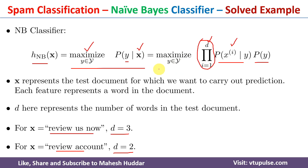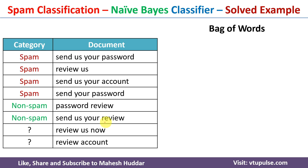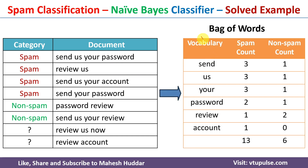Before applying the Naive Bayes classifier, there is one more step: we need to convert the given documents into a bag of words, meaning we count how many times each unique word appears in each class. First, we list all unique words — for example: send, us, you, are, and so on. Then we count occurrences per class. For example, 'send' appears three times in spam documents and one time in non-spam documents.